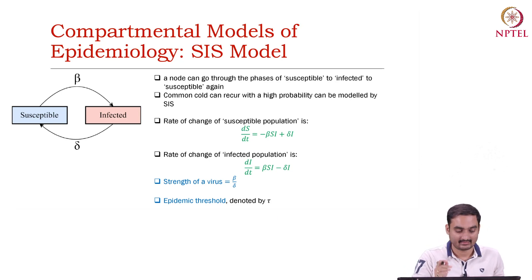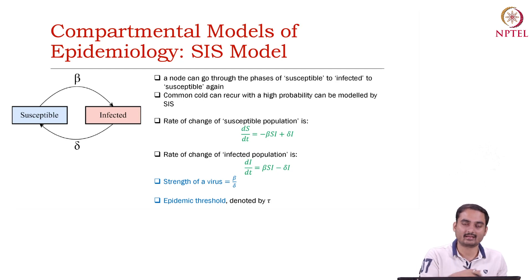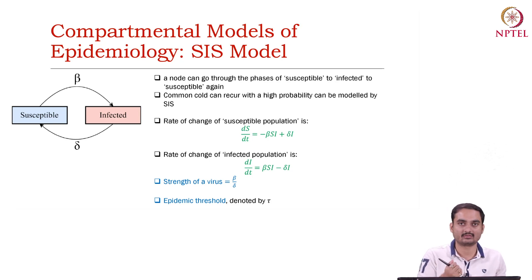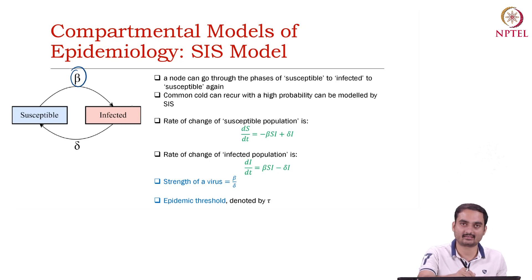Let us look at the second model — the SIS model: Susceptible, Infected, and back to Susceptible. There is no recovered state as such. When you get infected, you can again become susceptible. This is like a flu kind of virus spread — someone is susceptible, gets infected, and is again likely to become susceptible and then infected again. Here, with probability beta, a susceptible user becomes infected, and with probability delta, the infected user becomes susceptible.